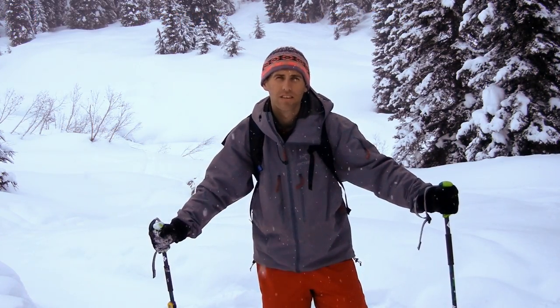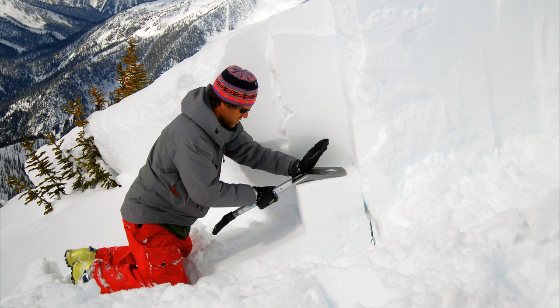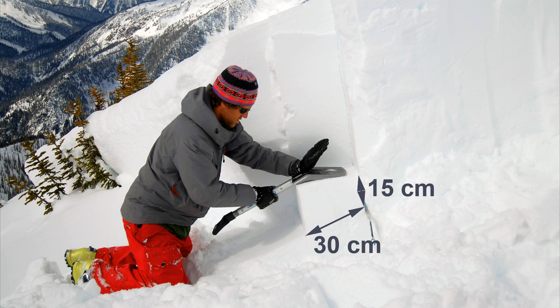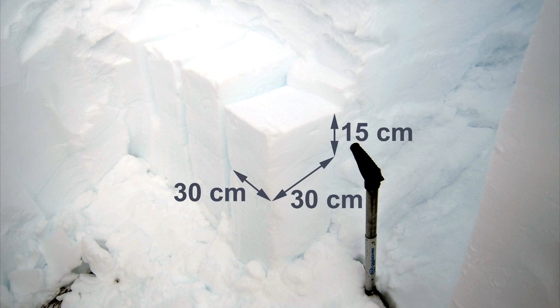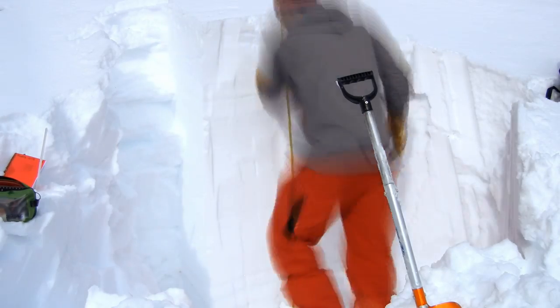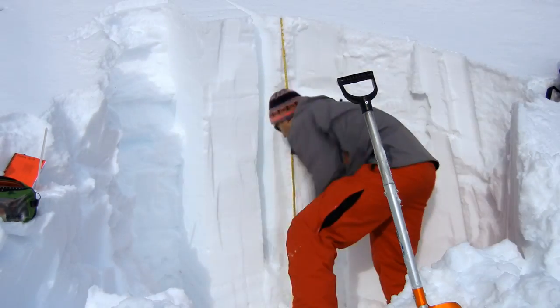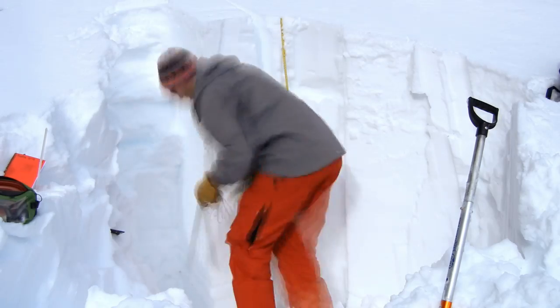Now we'll look at the deep tap test. The deep tap test is similar to the compression test, but it is only an analysis of a persistent weak layer relatively deep within the snowpack where the compression test is not effective. The snow above the persistent weak layer should be at least one finger hardness. The test is conducted by isolating a 30 cm by 30 cm column in the snowpack, like the compression test. Only 15 centimeters of snow above the weak layer, as measured from the back of the column, should be kept for this test. The same column as the preceding compression test can be used if the column was not disturbed around the weak layer of interest.